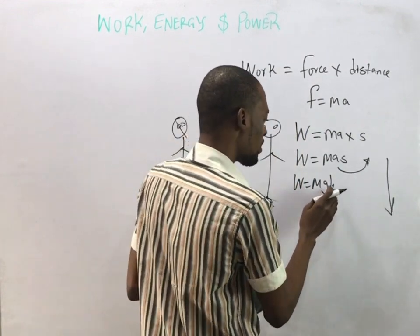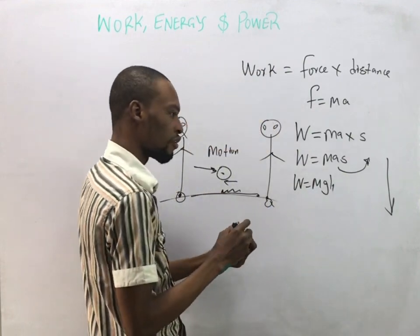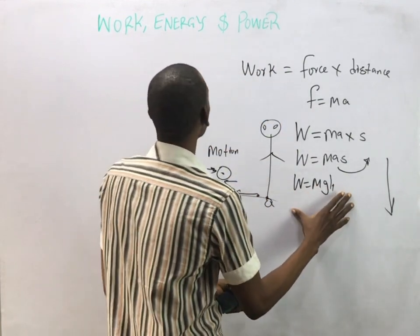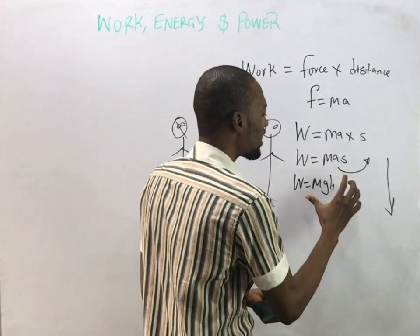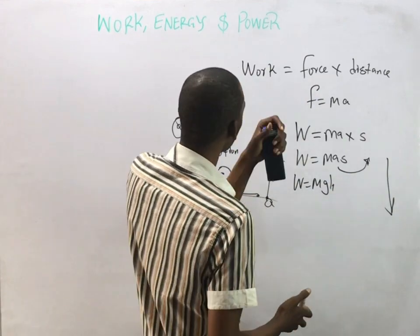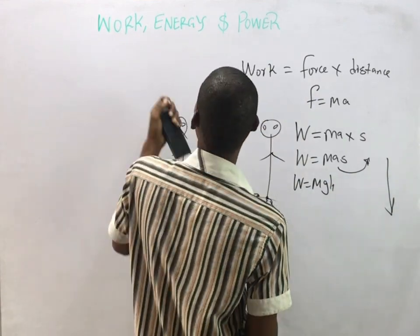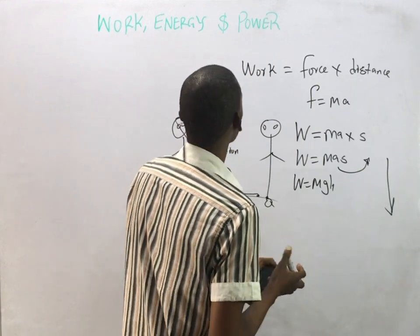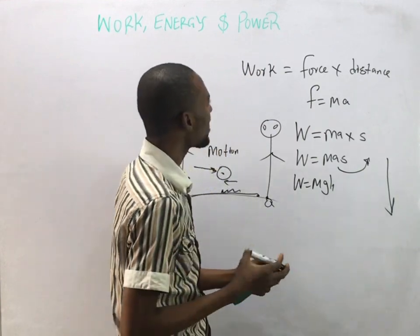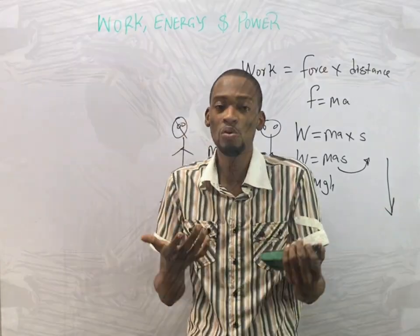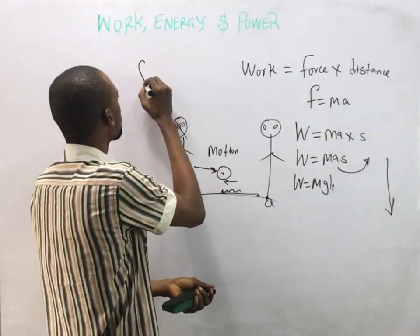So work done equals mgh for a vertical body, and this is equivalent to potential energy as well. Now let's look at energy. Energy is simply the ability or capability to do work. Energy can be in different forms.